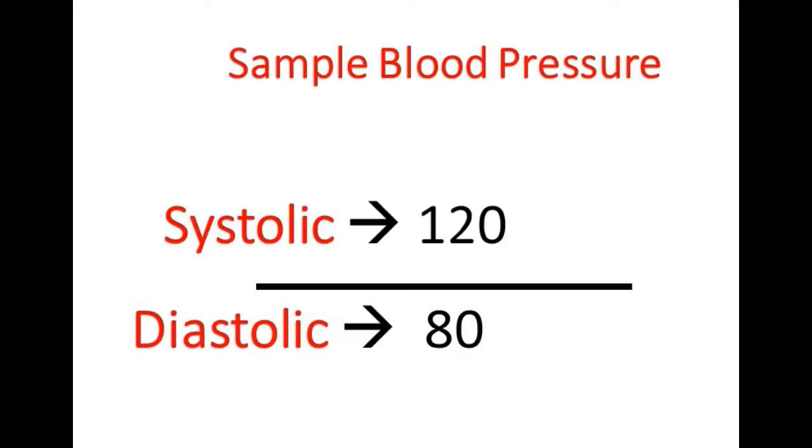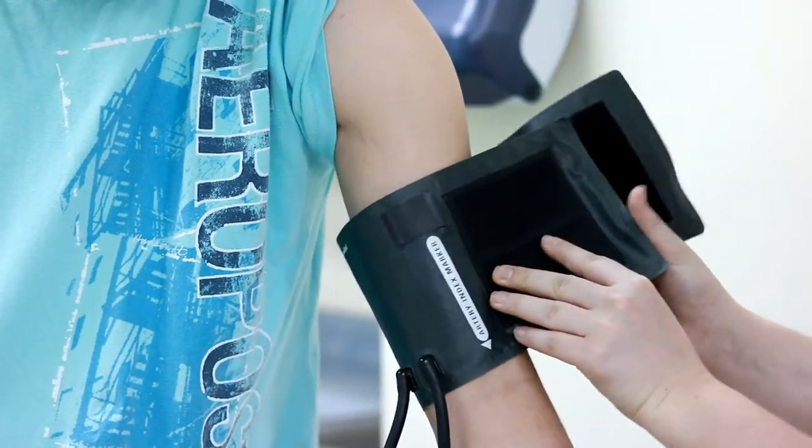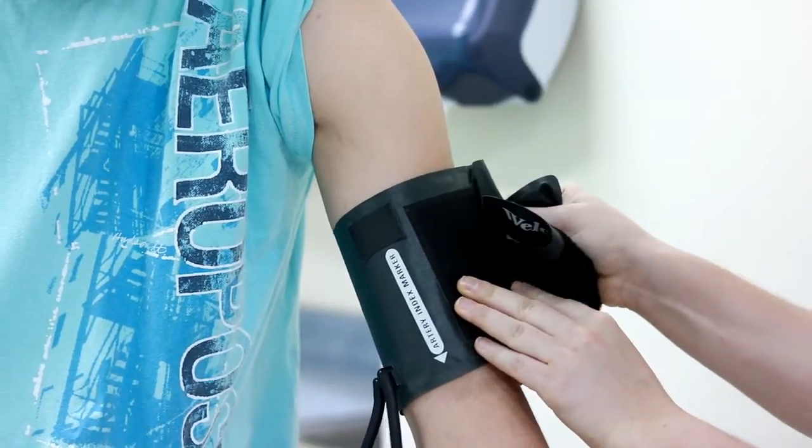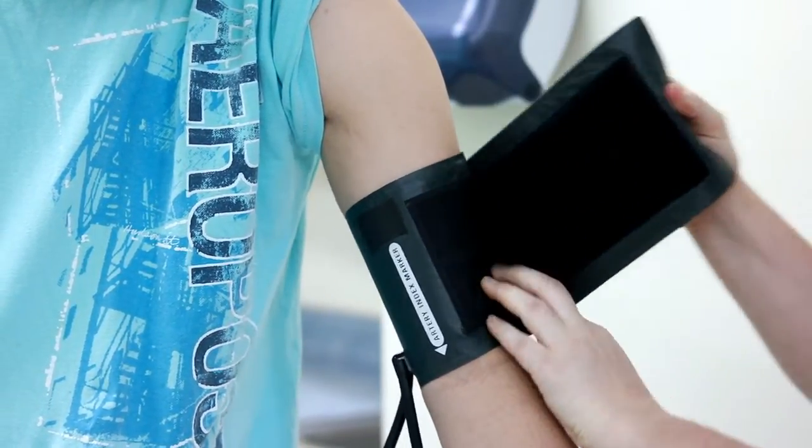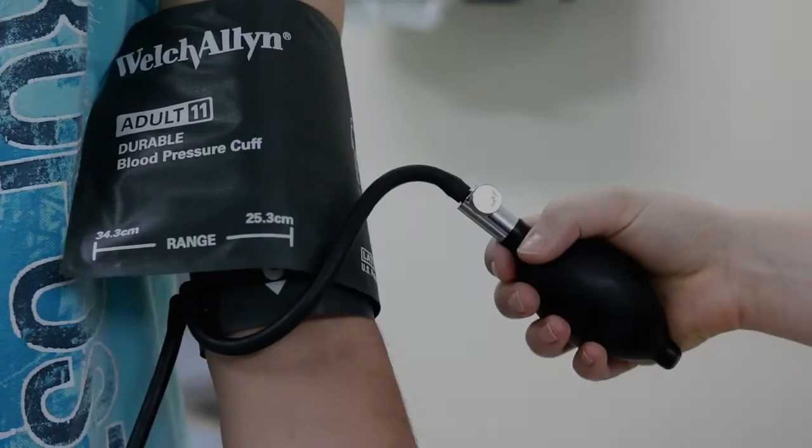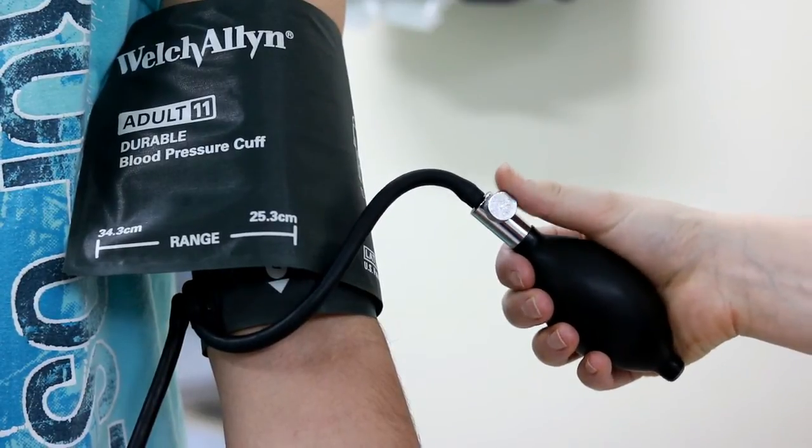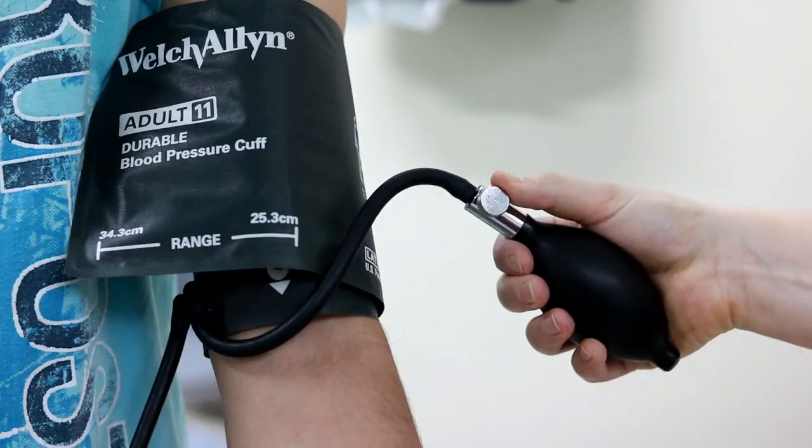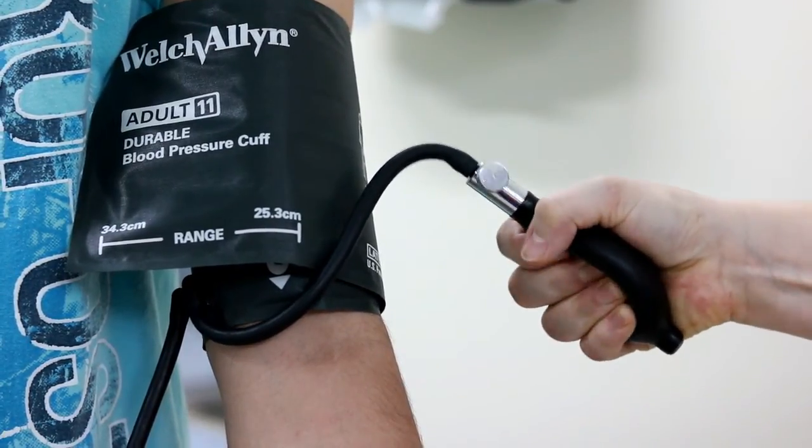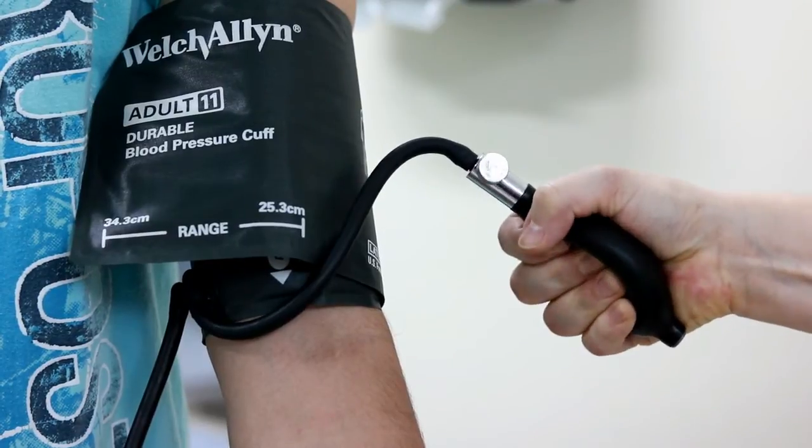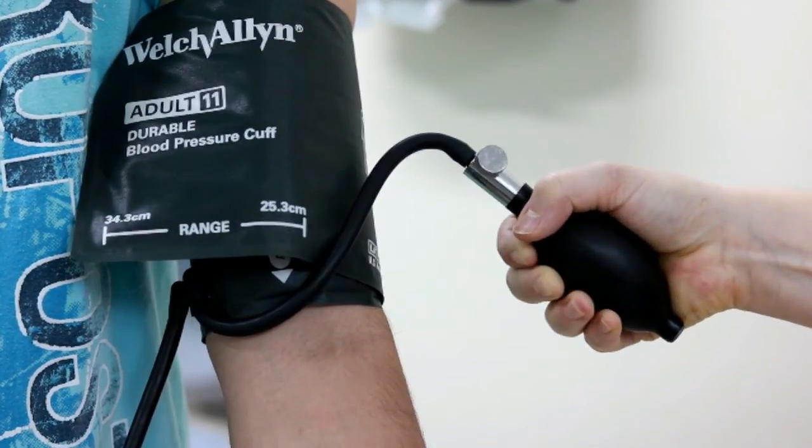When placing the cuff on the patient's arm, make sure to properly align the cuff by placing the marker in line with the patient's artery. Before squeezing the bulb, make sure that the valve on the bulb is closed so that pressure in the cuff will increase and no air will escape from the bulb. The initial inflation pressure must be above the patient's systolic pressure to cut off blood flow.